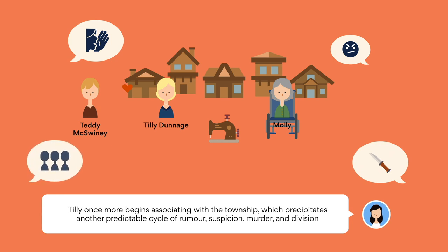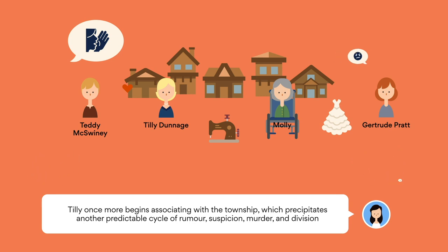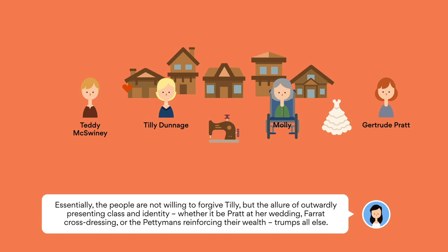At the footballer's dance, Tilly comes face to face with Dungatar's lingering resentment for Peterman's death, as the townspeople engage in slanderous gossip and refuse to make her acquaintance or publicly acknowledge her presence. However, after hand-making a beautiful wedding dress for Gertrude Pratt, the townspeople reluctantly acknowledge both Tilly's skills and provide a market for her booming dressmaking trade across Dungatar. Essentially, the people are not willing to forgive Tilly, but the allure of outwardly presenting class and identity — whether it be Pratt at her wedding, Farrat cross-dressing, or the Petermans reinforcing their wealth — trumps all else.